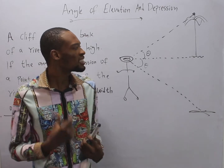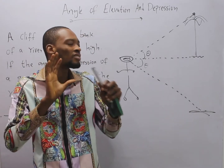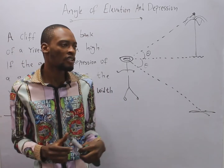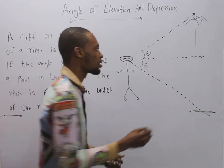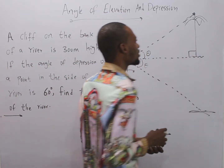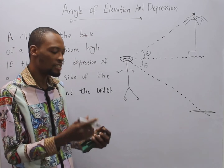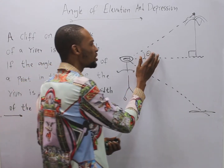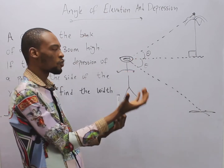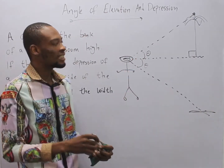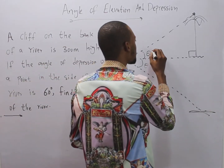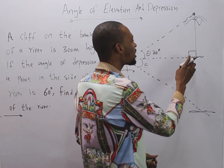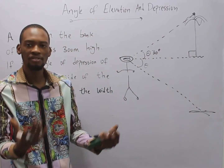Angles of depression and elevation both lead to the formation of a right-angled triangle. A right-angled triangle is a triangle whose one angle is 90 degrees. So if this is 90 degrees, they will give you the other angle in the question — for example, the angle of elevation is 30 degrees. If the angle of elevation is 30 degrees and we know this is 90 degrees, we're ready to solve.